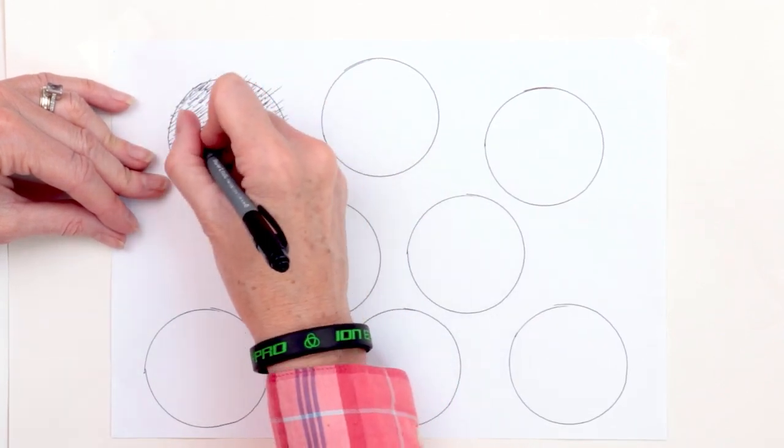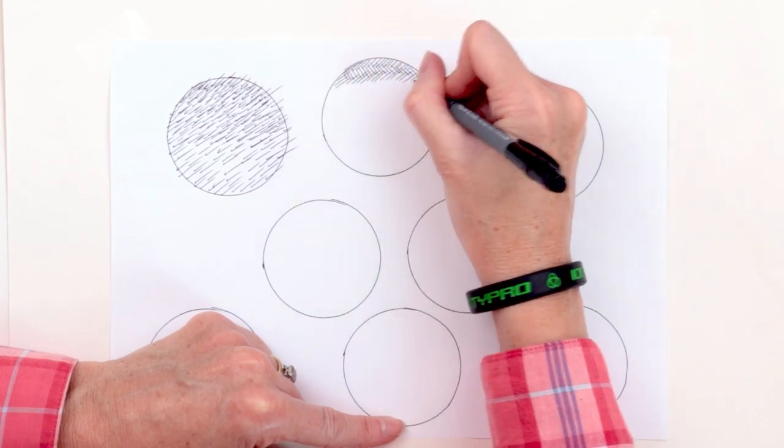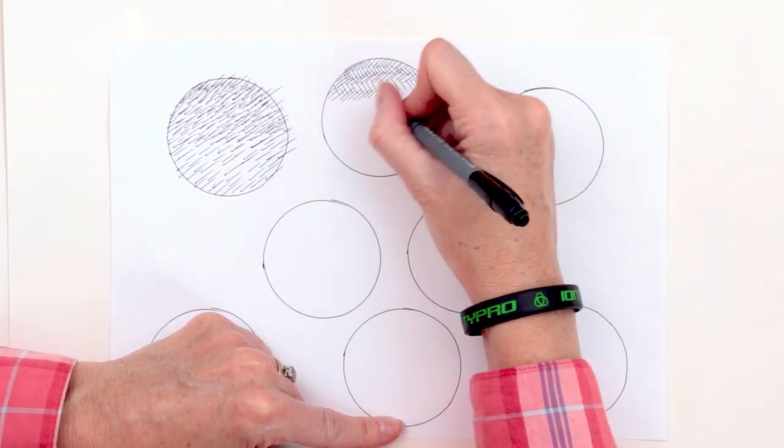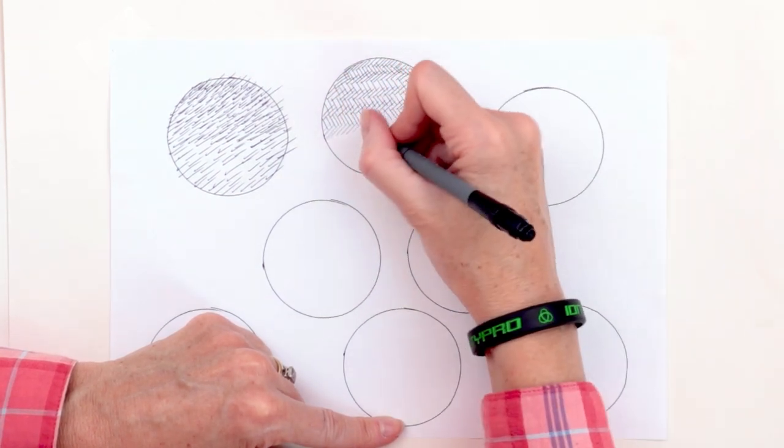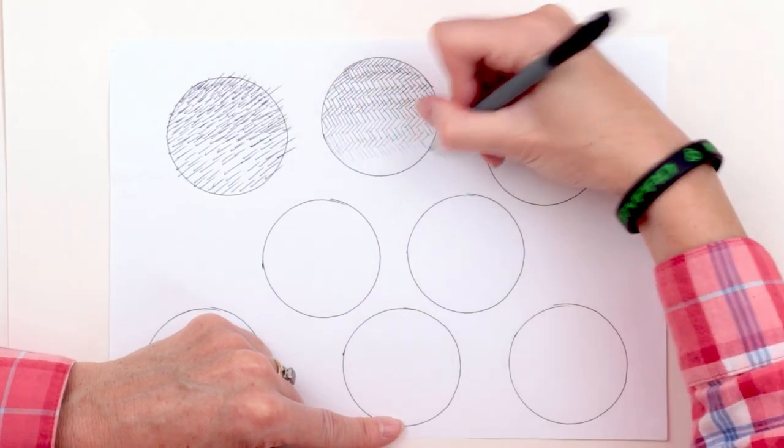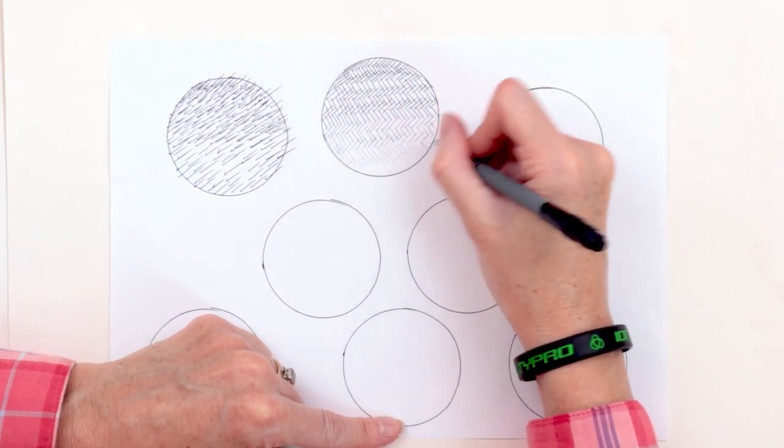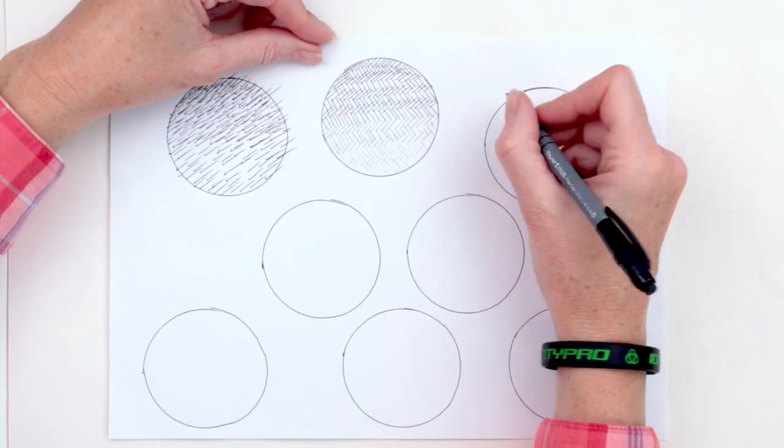And you can also see that as I've gone down with those criss-cross marks, I've got lighter and lighter and lighter. It's actually really surprising the different tones you can get with a biro. That's the beauty of a biro, I think.